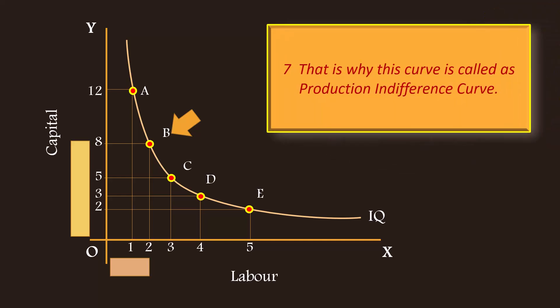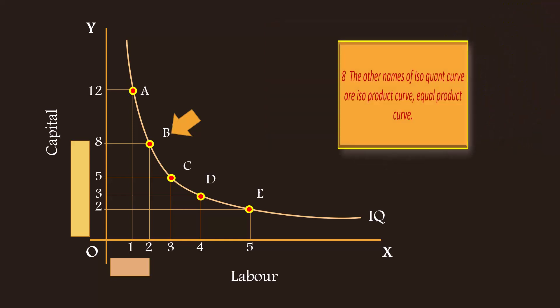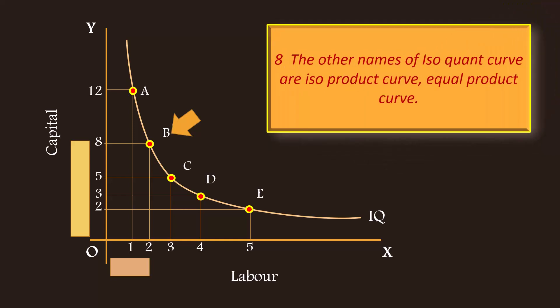Seven, that is why this curve is called as production indifference curve. Eight, the other names of the isoquant curve are isoproduct curve, equal product curve.